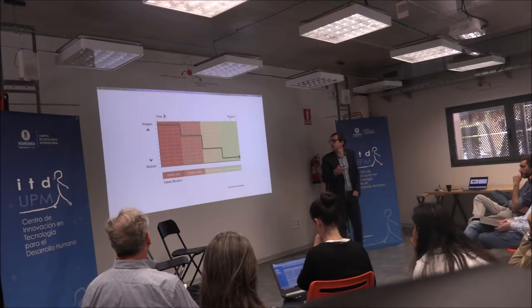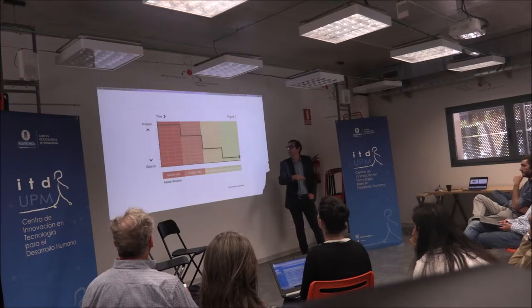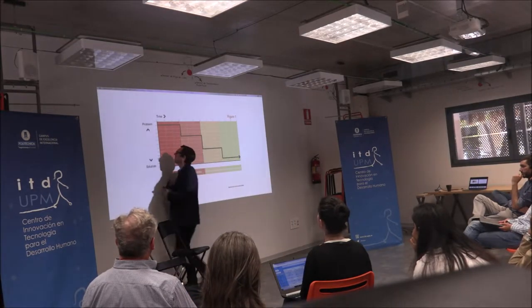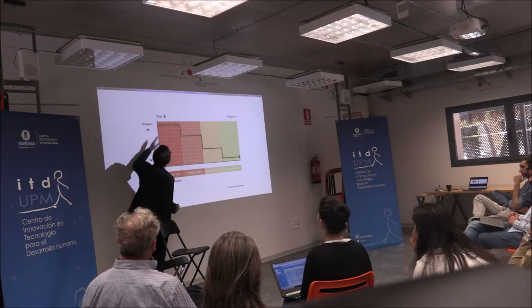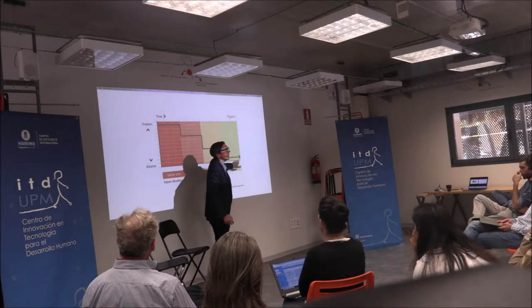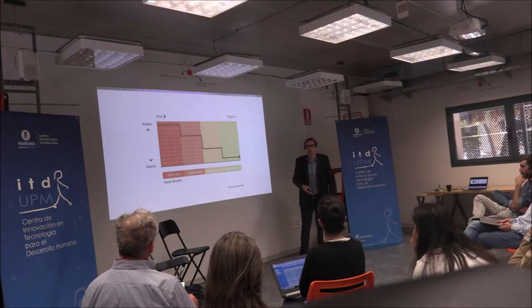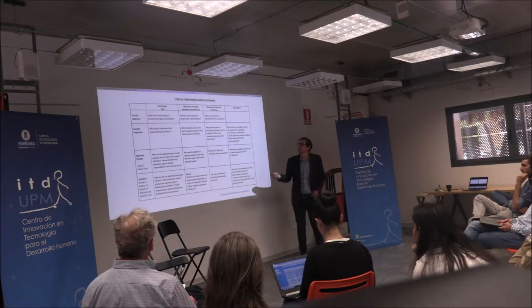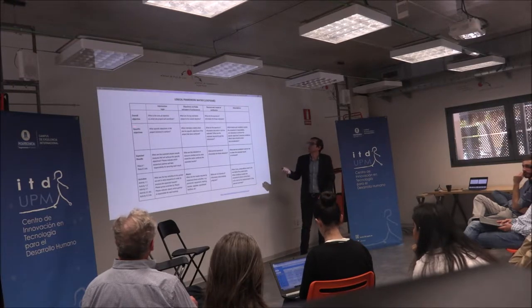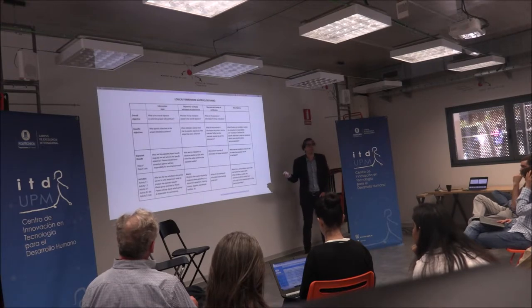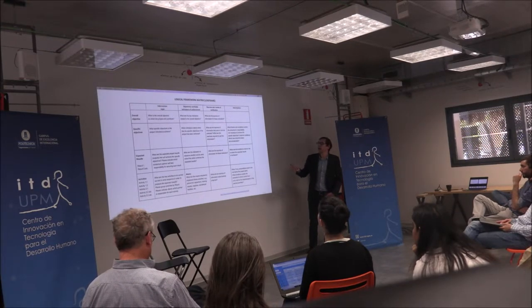If our system is behaving in this predictable way, something like a traditional logical approach makes sense. Here we have a problem, we understand it, we understand what the solution is, we start to implement steps and projects to incrementally make progress toward our desired solution. In a system like this, a logical framework approach makes complete sense. So here we have a log frame with our objective, what we think the causal linkages are, what we're trying to achieve, what information we need to measure progress, and the assumptions that underlie all of this logic.